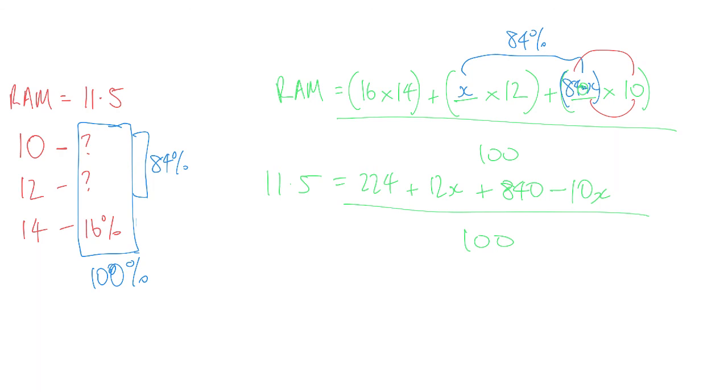So algebra time. This side is 11.5 times the 100, which happens to be 1150. There's a 224 and a 840. So 224 plus 840 is 1064. And then there's a positive 12x and a negative 10x, which means that it's a plus 2x.